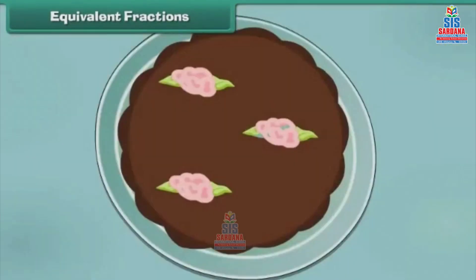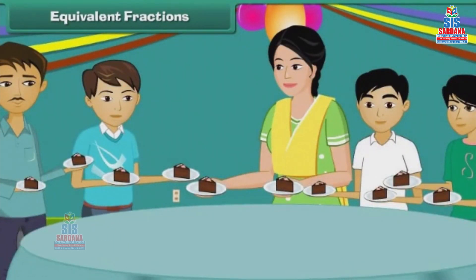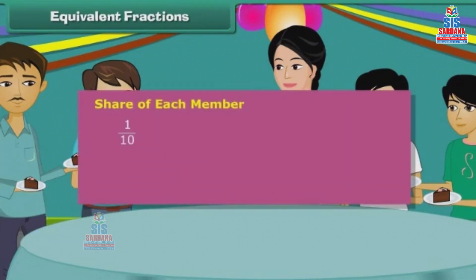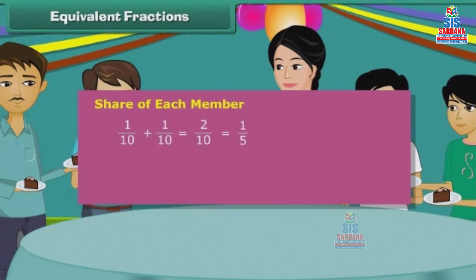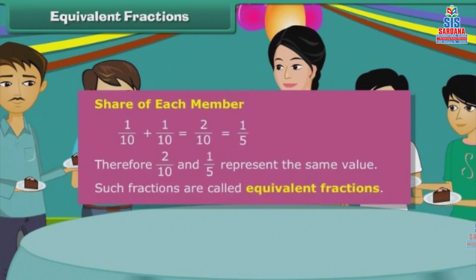Let us take a second look at Rishabh's birthday cake. It is divided into ten equal parts. Suppose none of Rishabh's friends is interested in the cake. Hence, Rishabh offers two pieces of the cake to each member of his family. Each member gets 1 by 10 plus 1 by 10, which is equal to 2 by 10 of the cake, which is the same as 1 by 5 of the cake. Therefore, 2 by 10 and 1 by 5 represent the same value. Such fractions are called equivalent fractions.